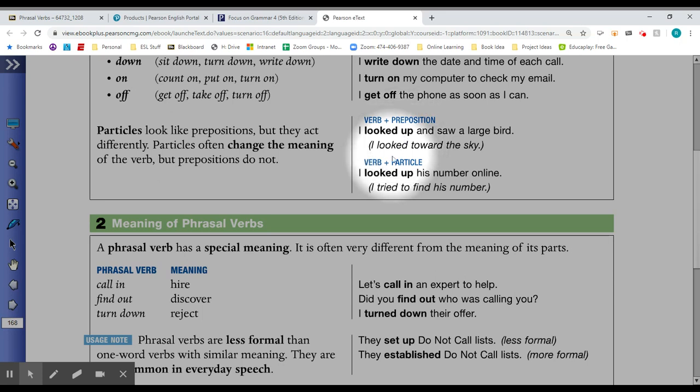But with a phrasal verb, to look up, with a verb and a particle, means I tried to find his number. I looked up his number online.